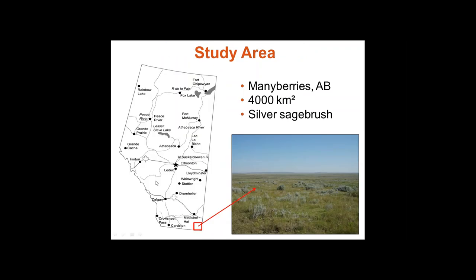My study area was in the extreme southeast corner of Alberta. If you're familiar with the area, there's a town called Many Berries roughly in the middle of the study area, which covers about 4,000 kilometers squared. The dominant type of sagebrush up here is silver sagebrush — not as thick and dense as big sagebrush in the States, but a good representation of what it looks like in Canada.